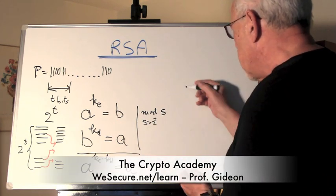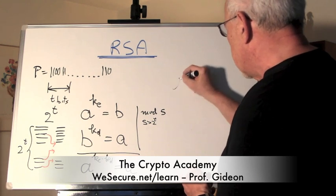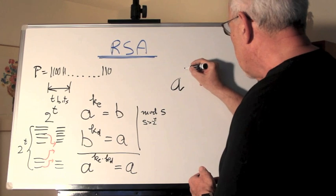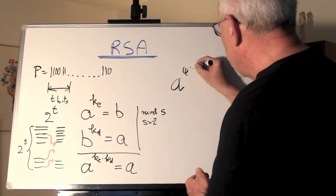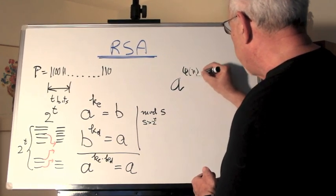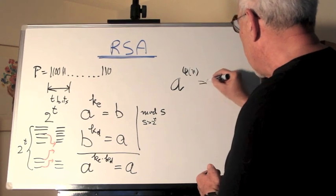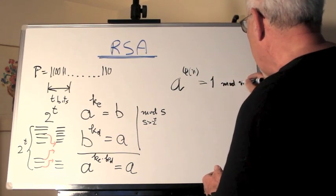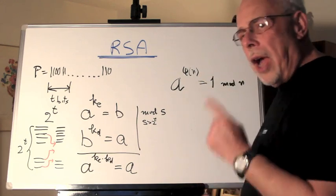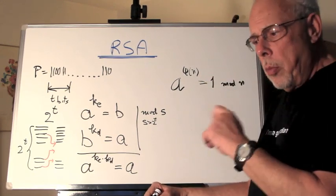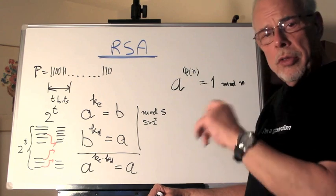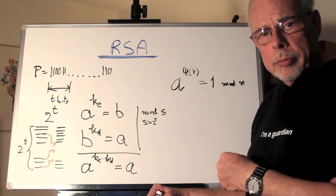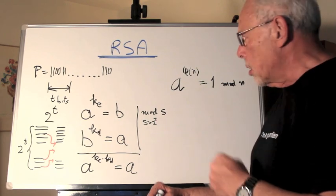And here is what he came up with. He said, if there is an A, and you raise it to the power of what he called Euler fraction of a number N, you get 1 mod N. Now, phi N is simply a count, a count of how many numbers smaller than N are co-prime with N. Don't divide N. That's it.